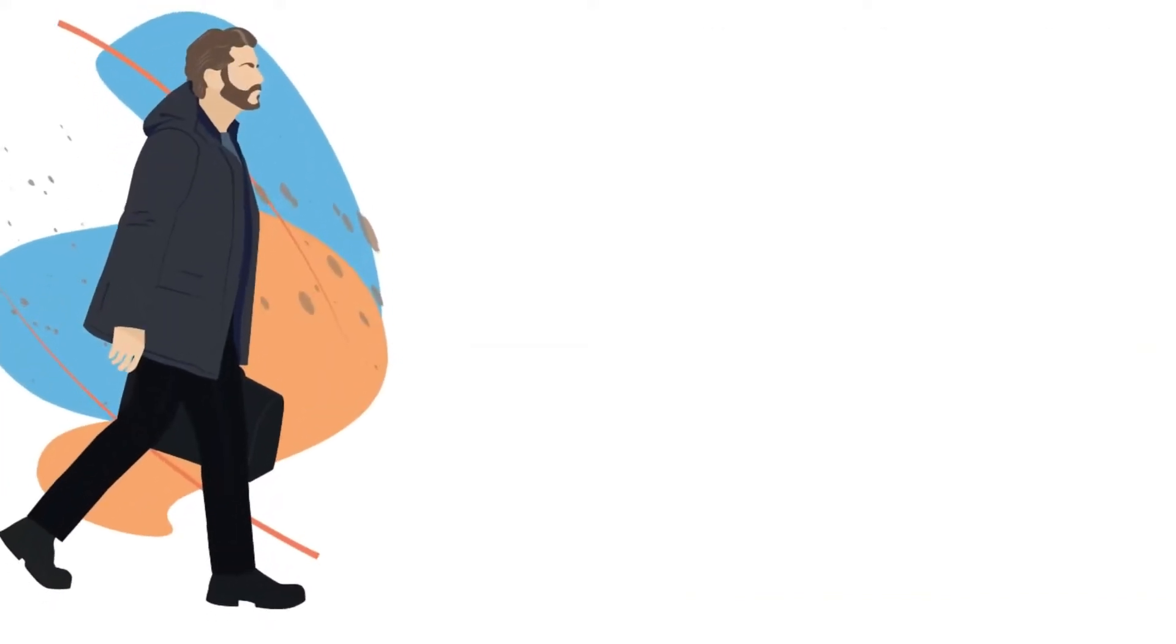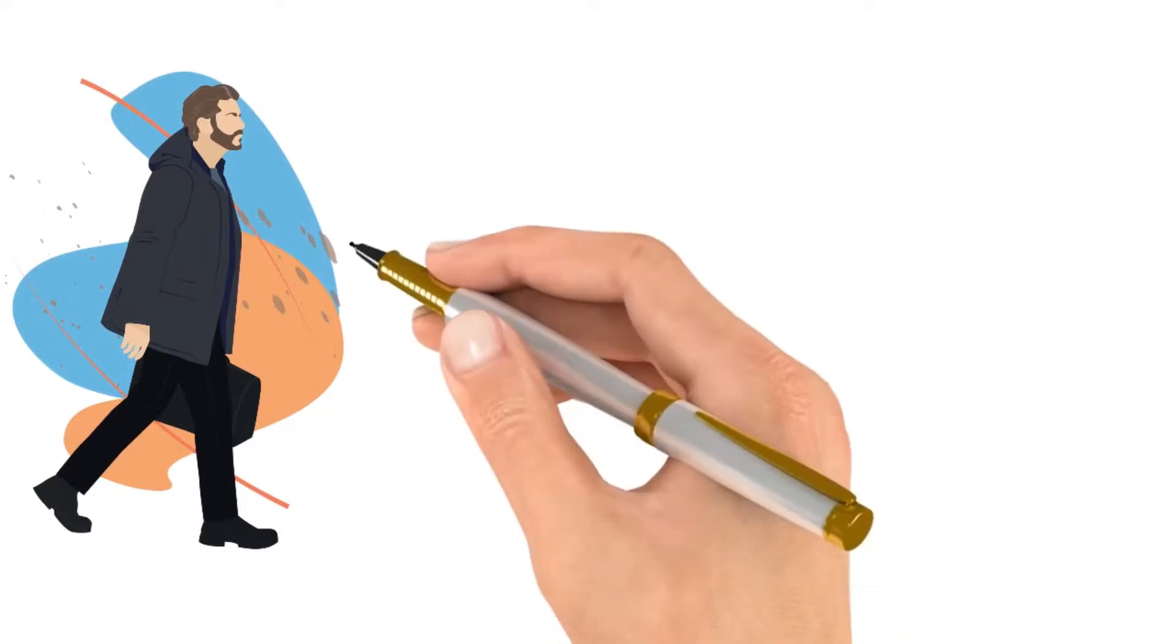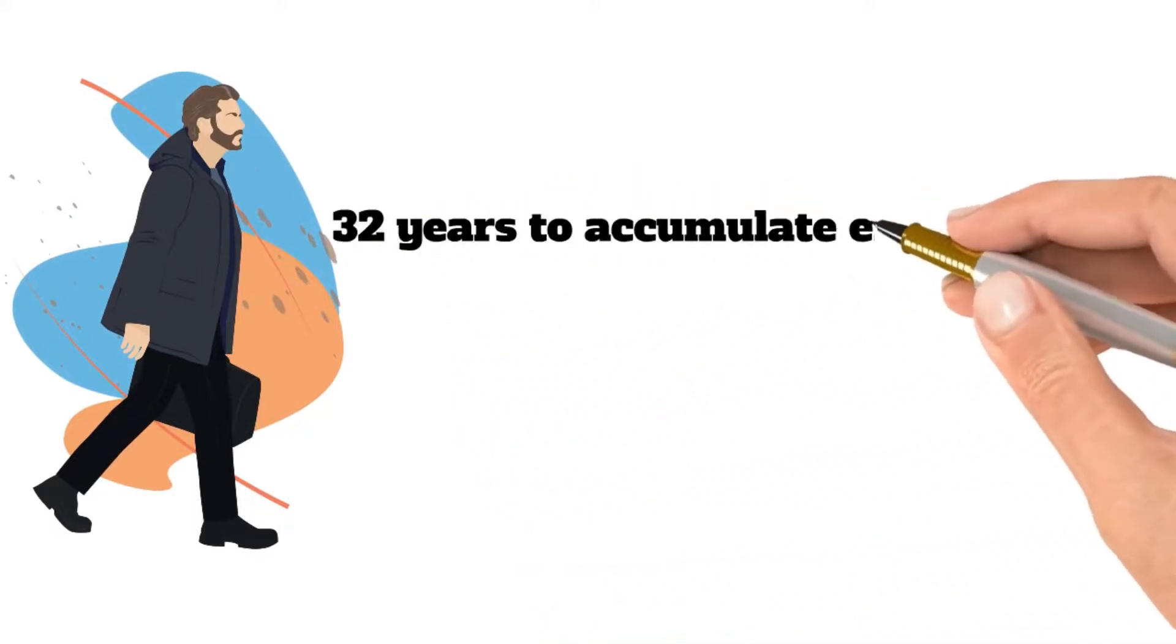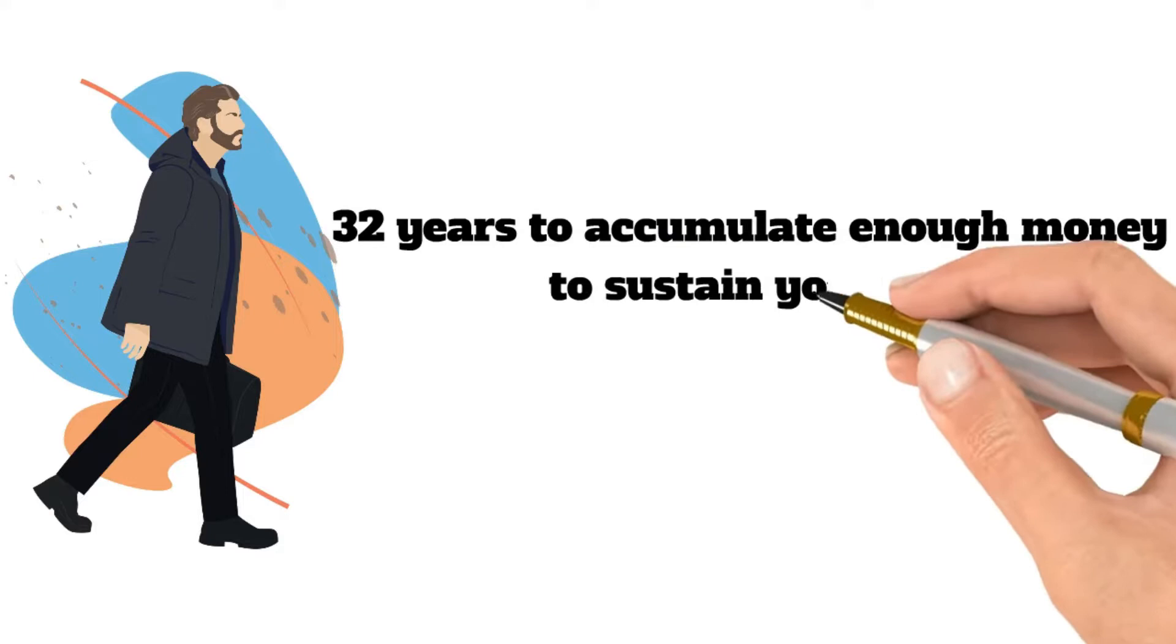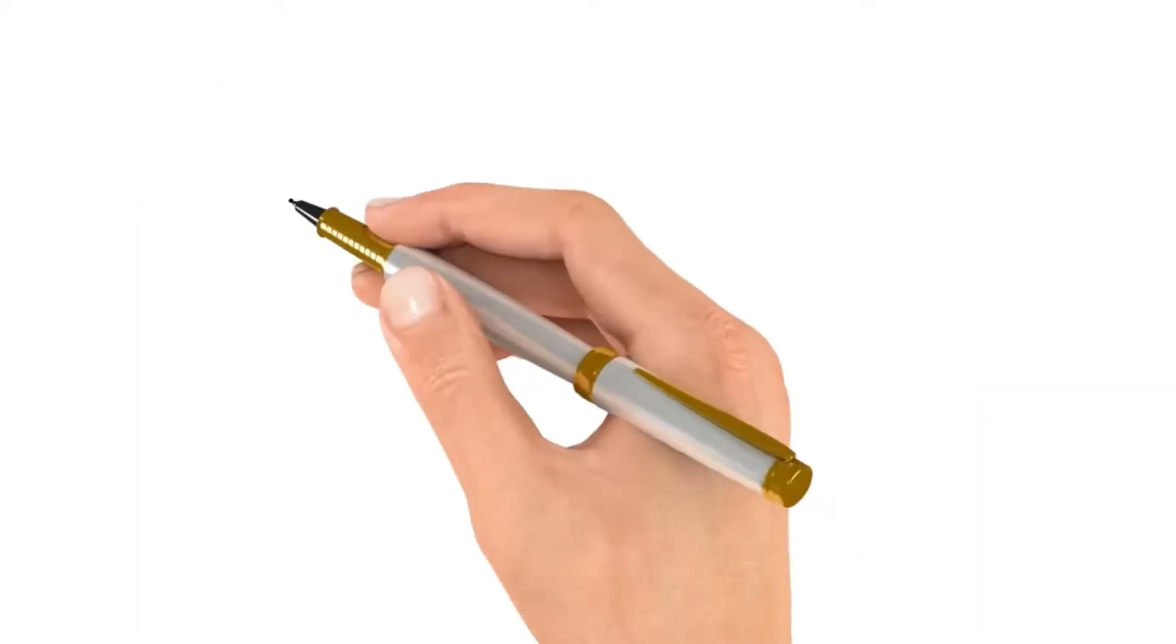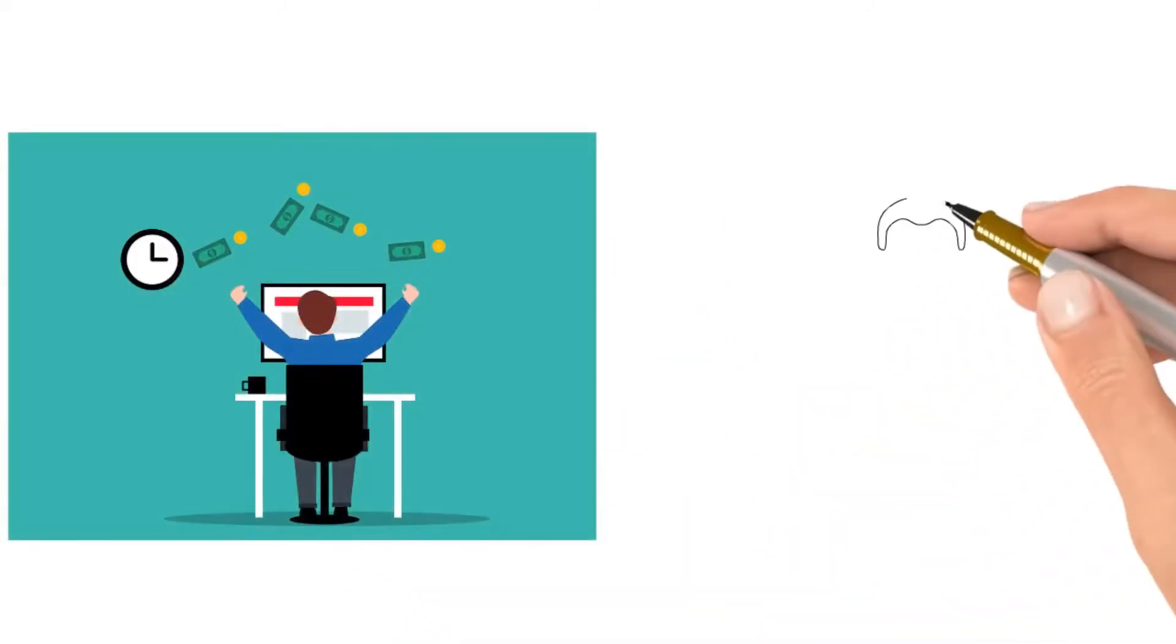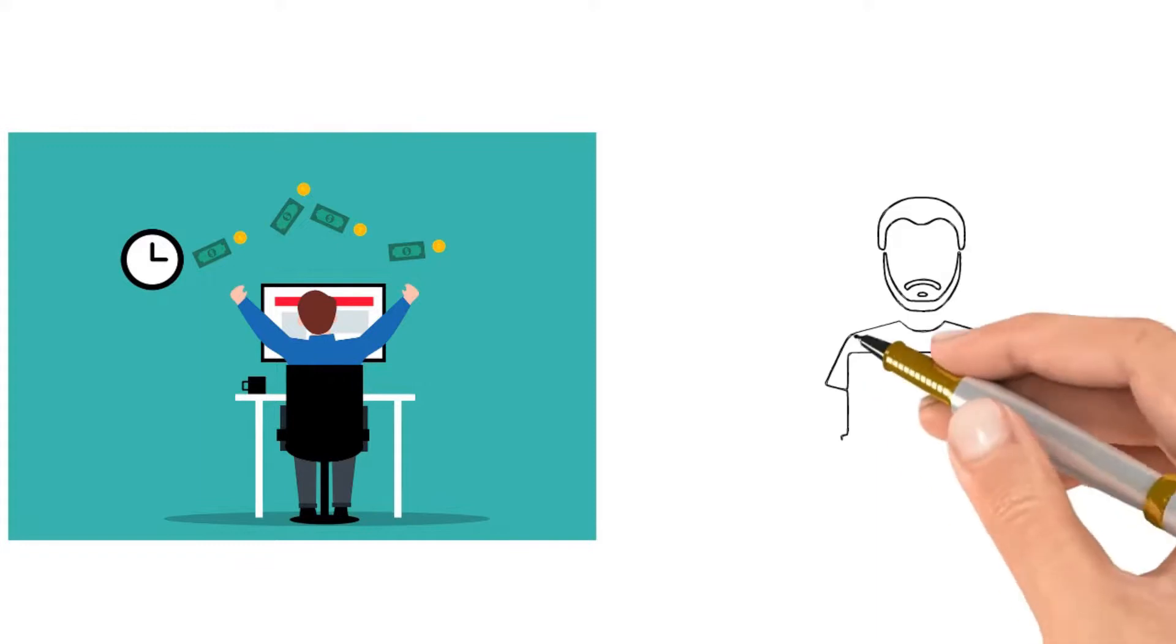On average, a person may expect to live to the age of 72. If you start working at the age of 24 and continue until you are 55, you will have only 32 years to accumulate enough money to sustain yourself for at least 17 to 30 years after you stop working.